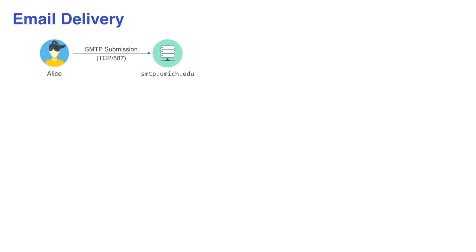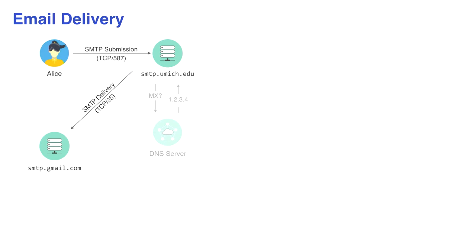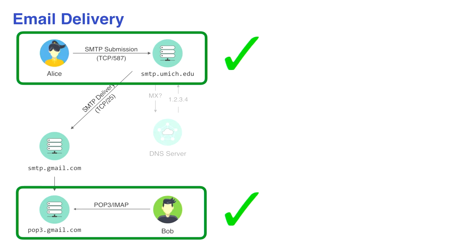When I say email delivery security, what am I talking about? Starting at the very beginning — how does email work? When you submit an email, you usually send it from your laptop to your organization's SMTP server, submitted over what we call SMTP submission. That server then takes responsibility for getting it to the destination organization. Your SMTP server does a DNS lookup for the MX record for the domain you're trying to send to, gets back a mail server name and IP address, and delivers the email to the destination organization's server, which holds it until the user collects it using POP3, IMAP, or a web interface.